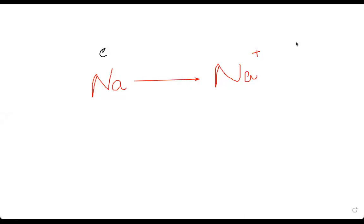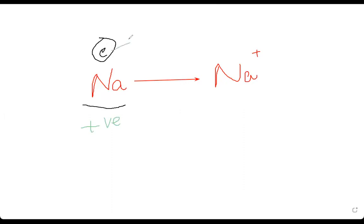This is a board. Sodium belongs to Group 1. If sodium belongs to Group 1, it has one valence electron. One valence electron means its valence shell contains one electron. Sodium is a metal, and all metals are electropositive, which means during a reaction it will donate one electron — it is going to lose one electron.